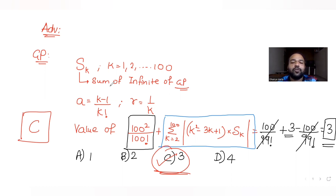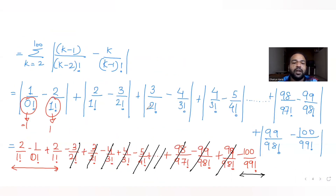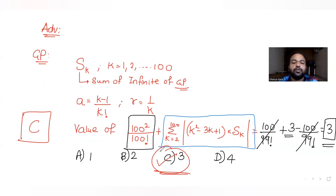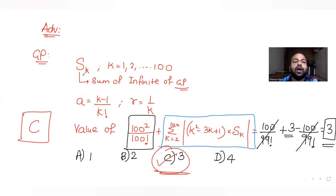In summary, we used the sum of infinite terms of a GP to find S_k = 1/(k-1)!, substituted it into the expression, and identified a telescoping pattern. All intermediate terms cancelled except four, giving 3 - 100/99!. Adding 100/99! from the first part gave a final answer of 3. I hope you understood this approach — I'll see you tomorrow with another question. Please like, share, and subscribe, and share with friends preparing for JEE. Thank you!